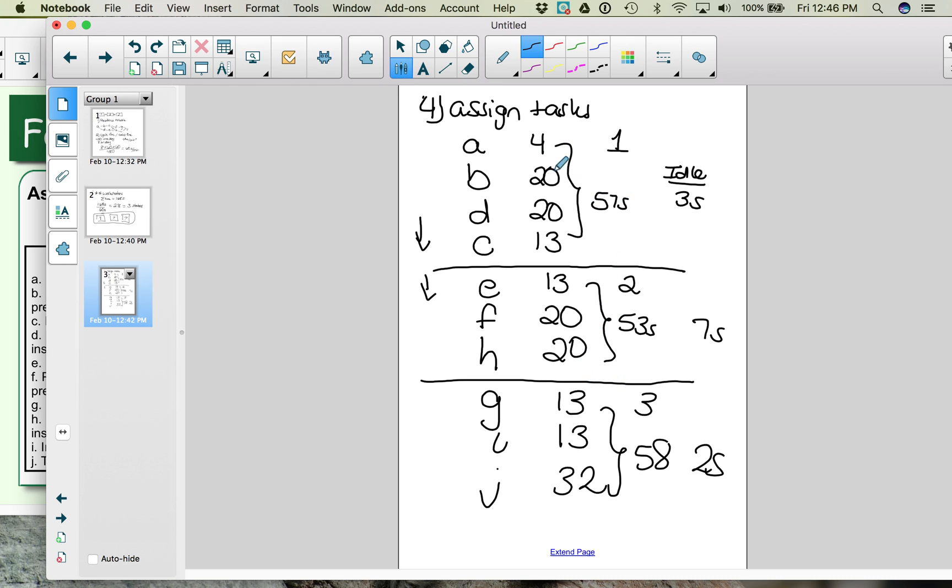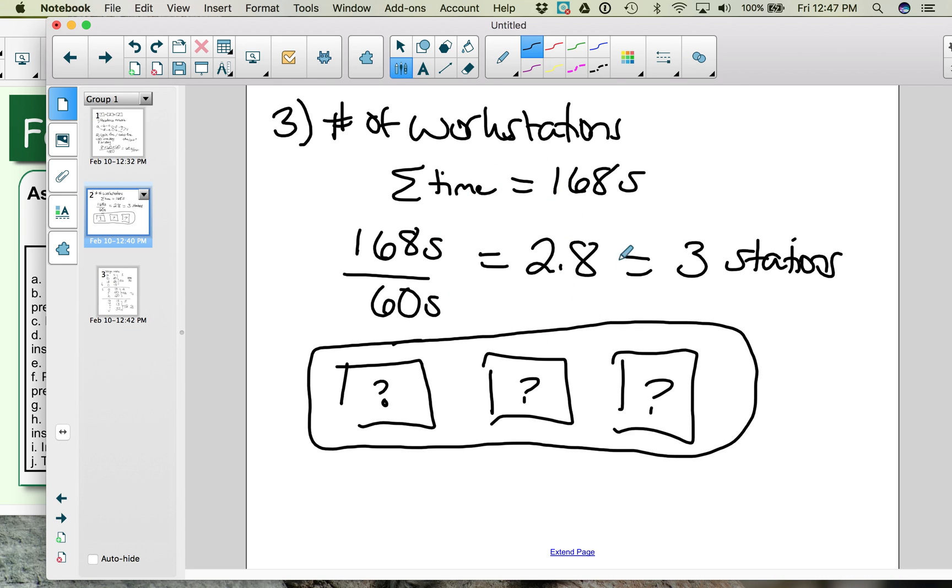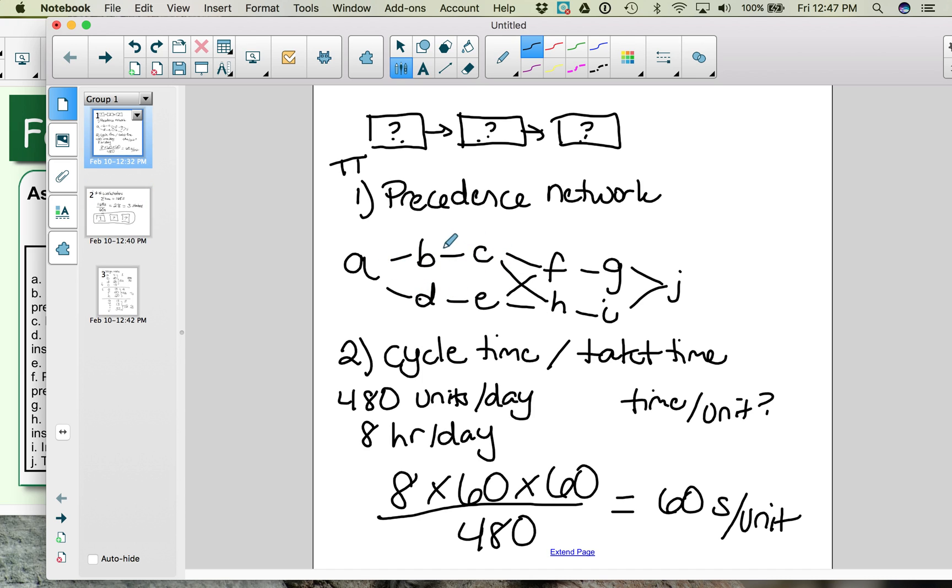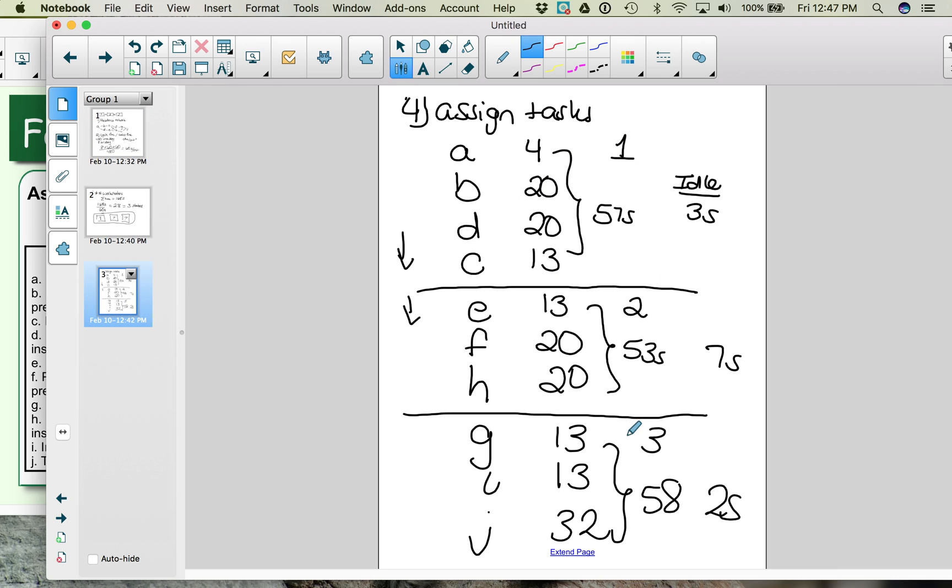If you are finding that when you assign the tasks, you are ending up with more workstations than you calculated in part three, then you should check and make sure that your workstations have been properly allocated. Make sure that you are putting them in order based on that precedence network, starting with the ones that have the most followers. We want to add up how much idle time we have, and so we can see how efficient this is. So if we add up our idle time, that's 3 seconds plus the 7 seconds plus the 2 seconds, we have total idle time of 12 seconds.